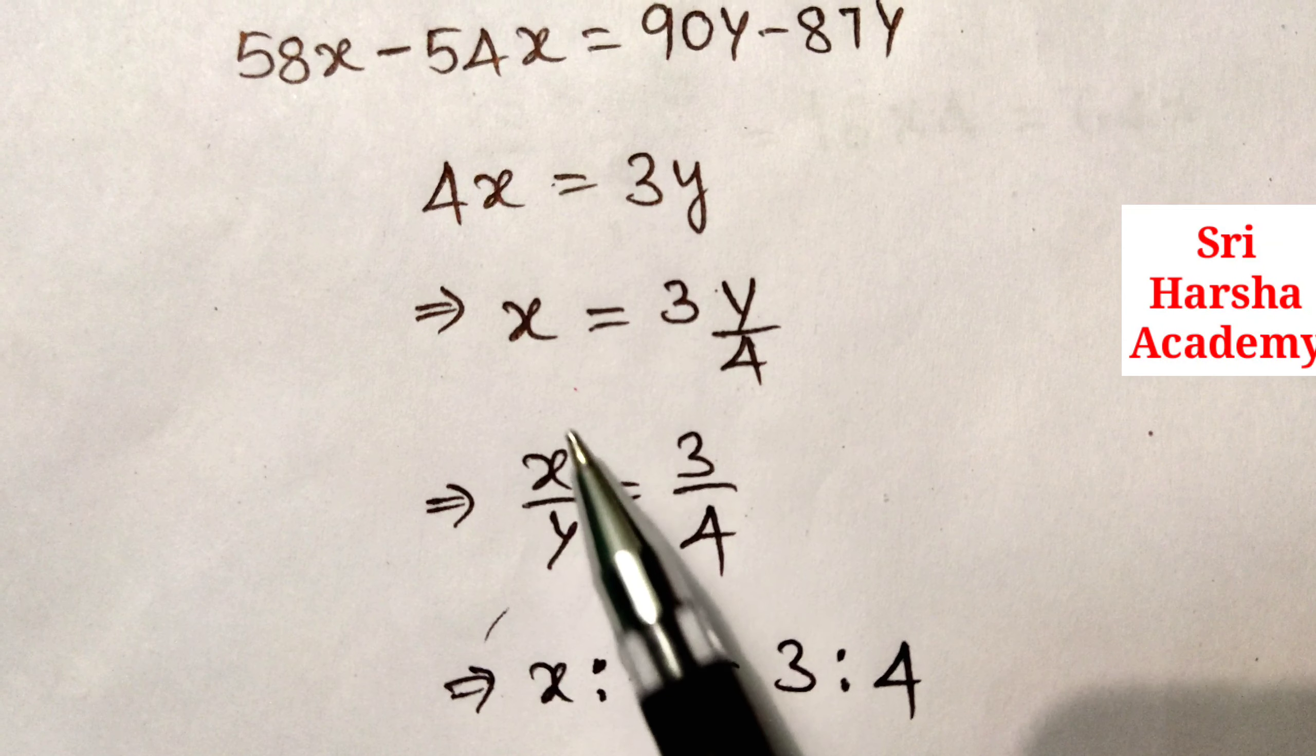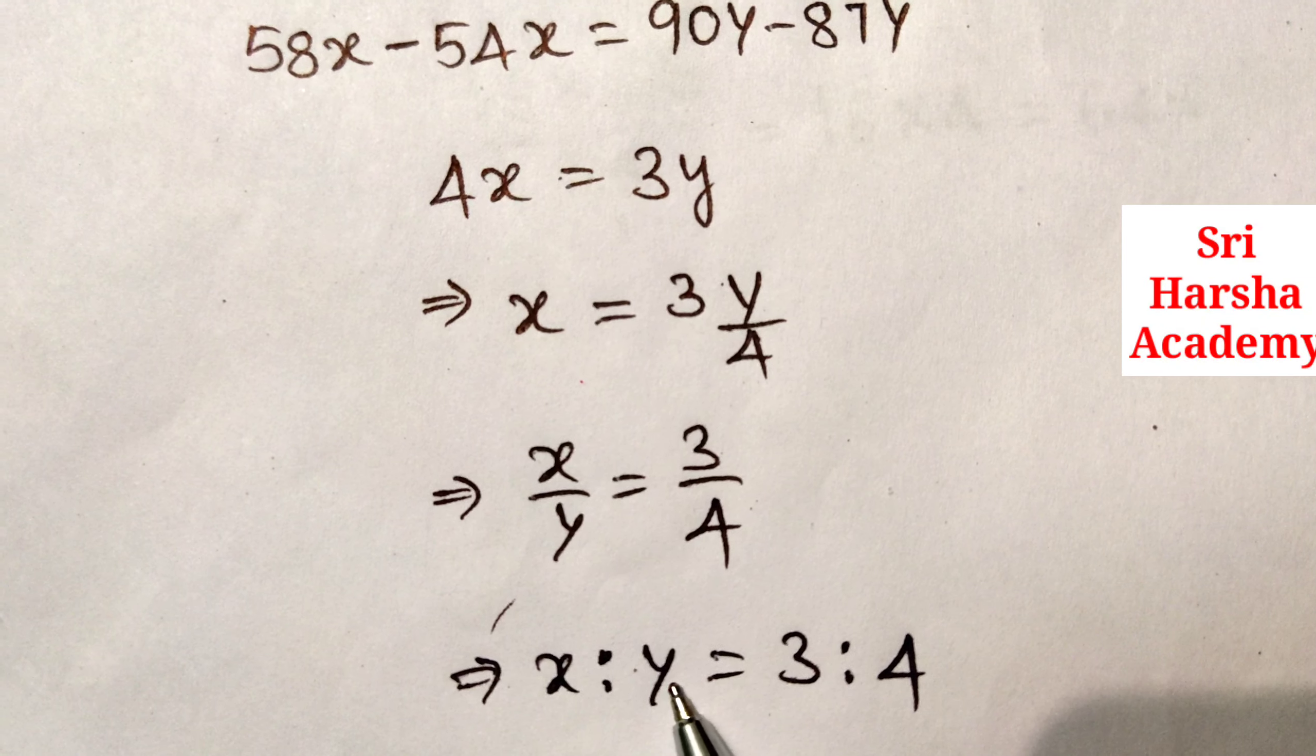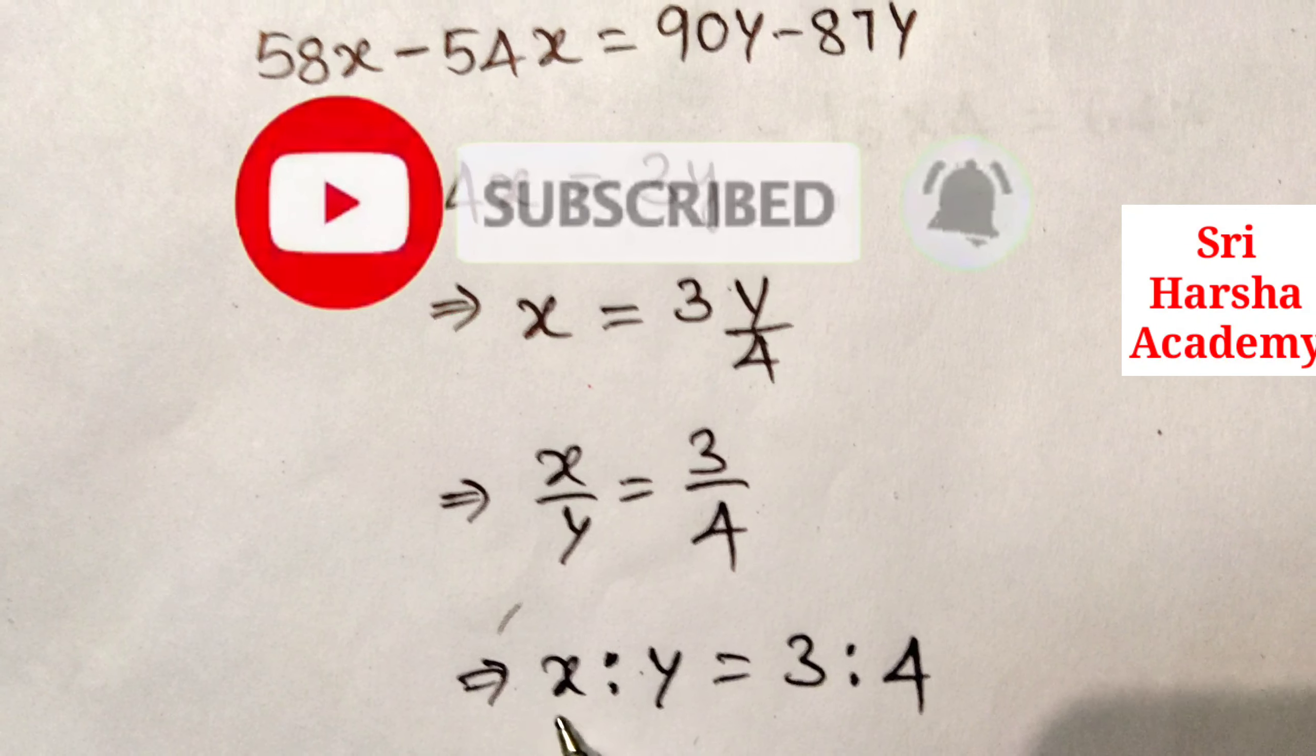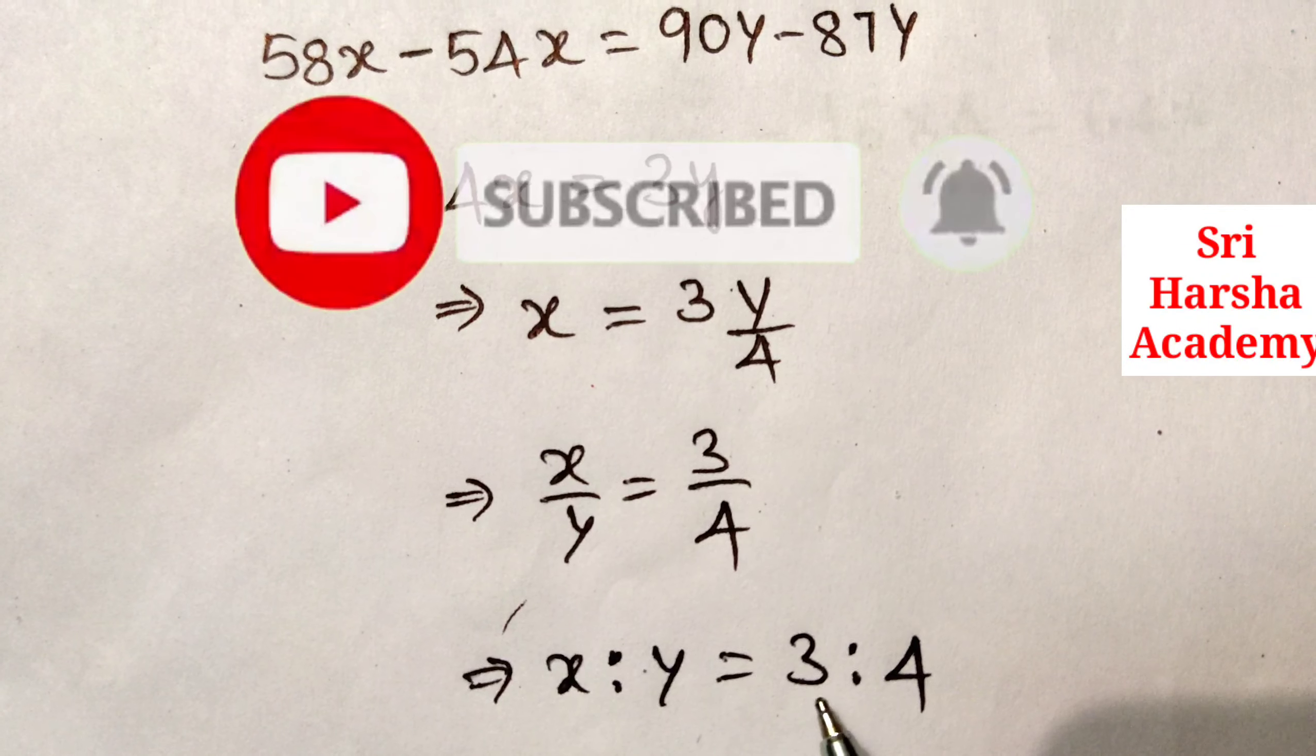x by y, it can be written as x is to y, is equal to 3 by 4, it can be written as 3 is to 4. x is to y ratio is 3 is to 4.